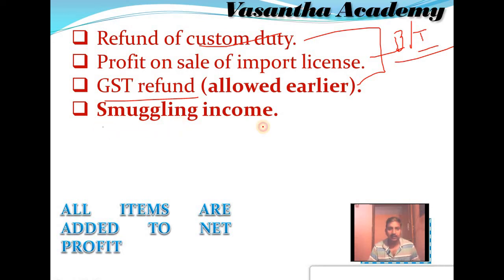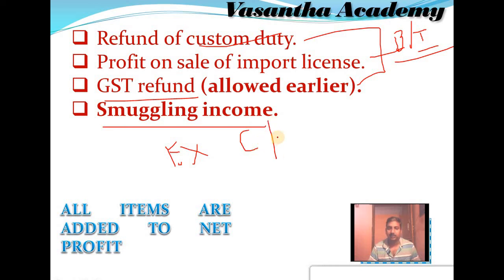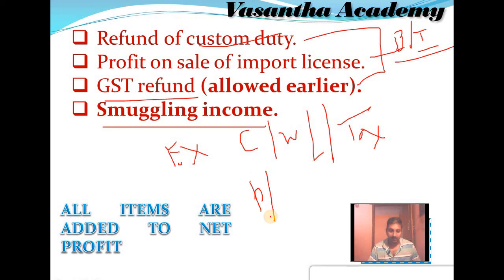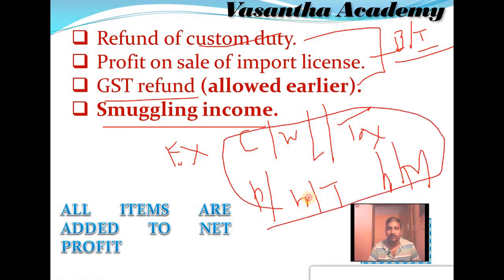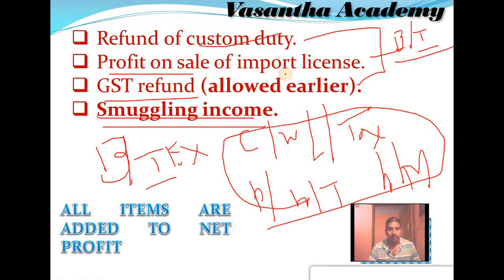Next, smuggling income. What do you mean by smuggling income? Profits are derived from avoiding taxes on imported goods. For example, if a smuggler purchases a quantity of cigarettes in a place with low tax and smuggles them into a place with high tax, they can sell those goods at a very high margin. This income comes under smuggling income and is treated as business income.